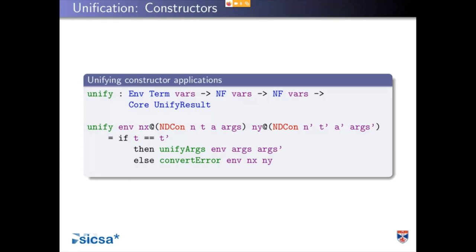On the other hand, if we're unifying a constructor with a constructor — say successor of x with successor of zero — we can conclude that x equals zero. That's a property of constructors: they are injective and cancelable, so the arguments must correspond. If successor of x equals successor of y, then x equals y. The rule in our unification algorithm: if we know that the tags are the same, we just go through the arguments and check that they correspond. unify args corresponds to the all-conv we had earlier, just calling unify rather than conversion.